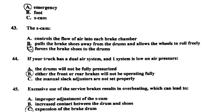Number fifty-one: if a truck or bus has ABS, it would have a yellow malfunction lamp on the instrument panel — B. Number fifty-two: the modulation control valve allows you to operate the — A, spring brakes. Number fifty-three: cracks in the drum cannot be longer than half the width of the friction area.